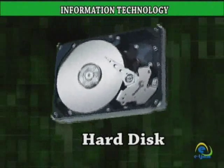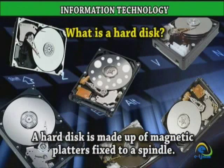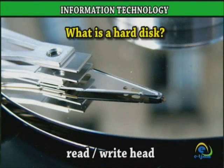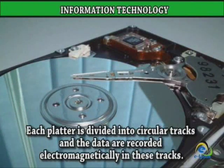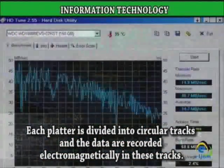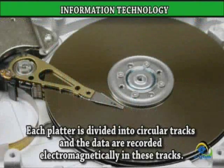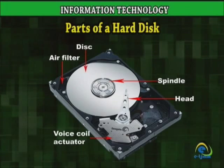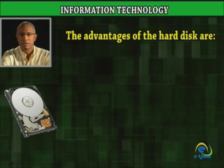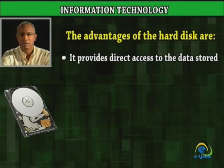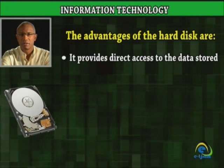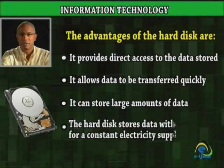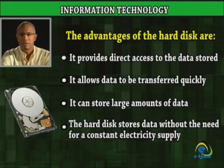Hard disk is made up of magnetic platters fixed to a spindle. On each side of the platter is a read-write head. Each platter is divided into circular tracks and the data are recorded electromagnetically in these tracks. The advantages of the hard disk are: it provides direct access to the data stored, it allows data to be transferred quickly, it can store large amounts of data, and the hard disk stores data without the need for a constant electricity supply.